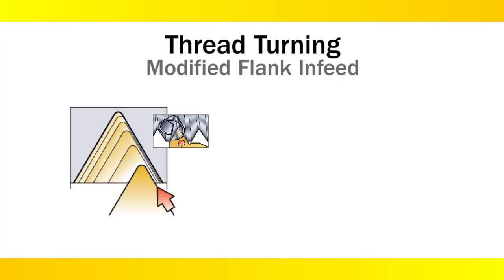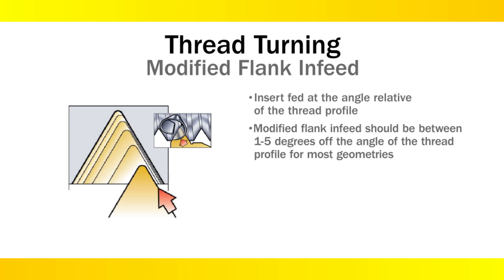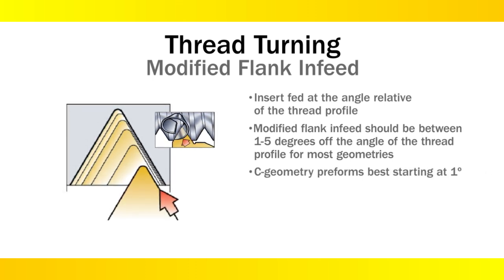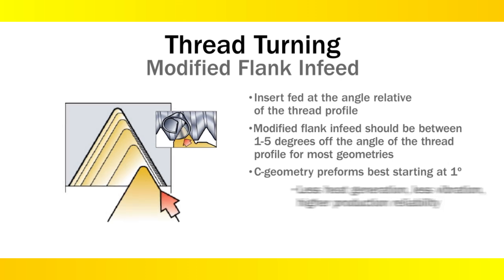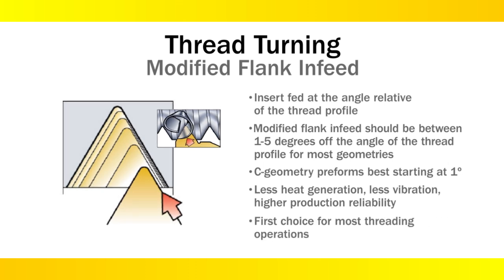With modified flank infeed, the insert is fed in at an angle relative to the thread profile. This angle is usually 1 to 5 degrees for A and F insert geometries, and 1 degree for chip breaker C geometries. The advantage of this method is less heat generated, less vibration, and higher production reliability. This method should be a first choice for most threading operations.